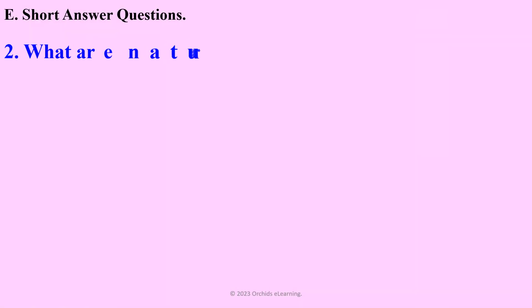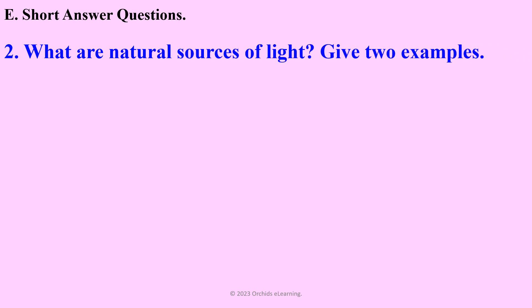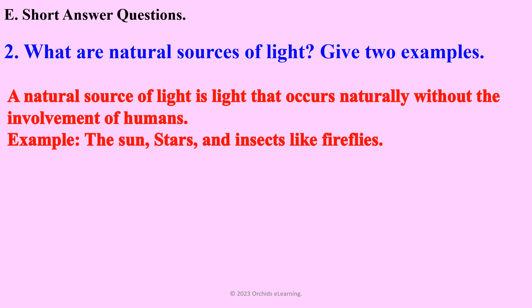What are natural sources of light? Give two examples. A natural source of light is light that occurs naturally without the involvement of humans. Examples: the sun, stars, and insects like fireflies.